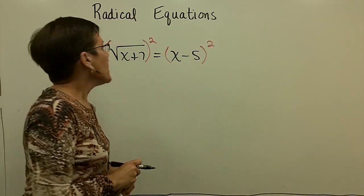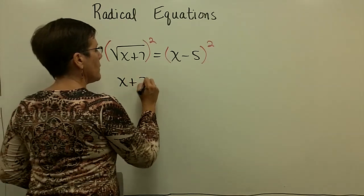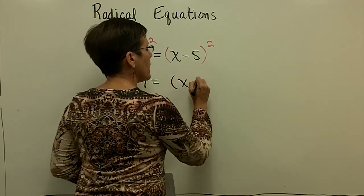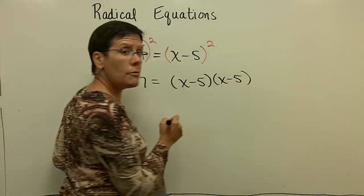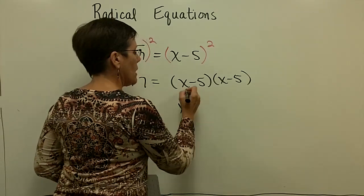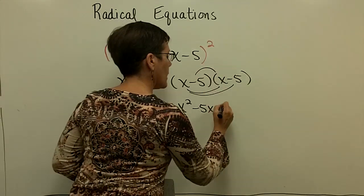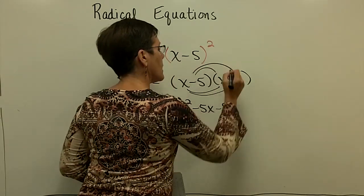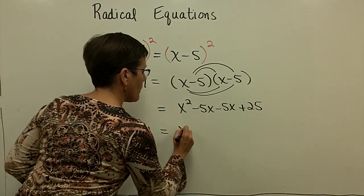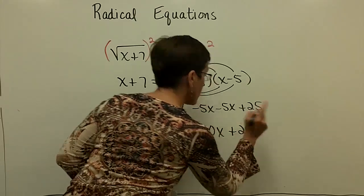On the left side, that's pretty nice. The square root of x plus 7 squared is just x plus 7. But on the right side, x minus 5 squared means to take x minus 5 and multiply it by x minus 5 and FOIL that. So this x times x is x squared. And then I have a minus 5x here, and another minus 5x here, and a negative 5 times a negative 5 is a positive 25. And finally, on the right-hand side, I have x squared minus 10x plus 25.